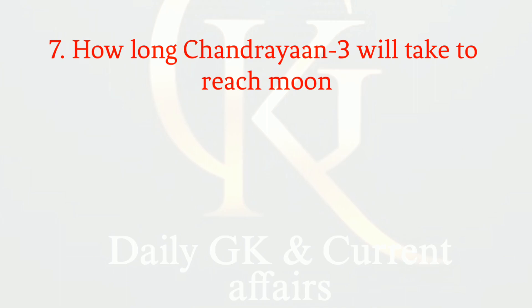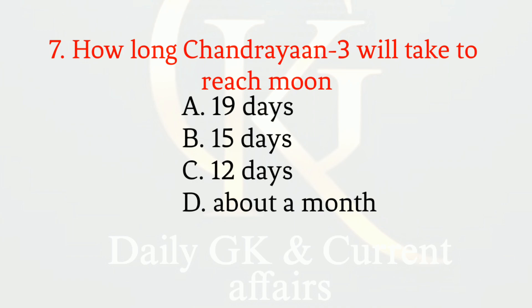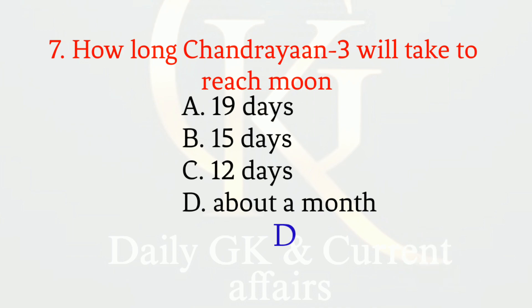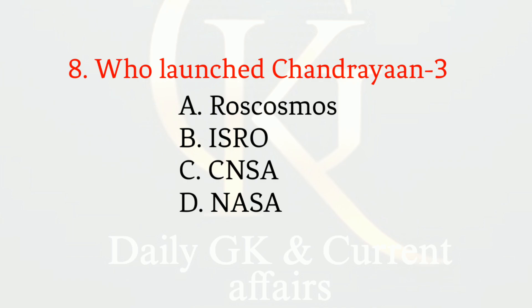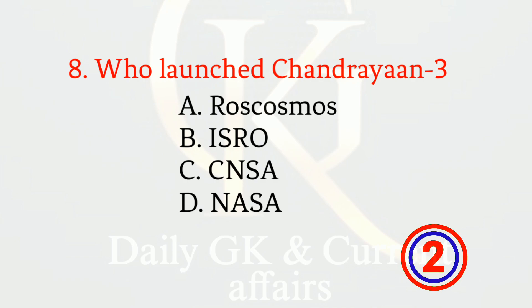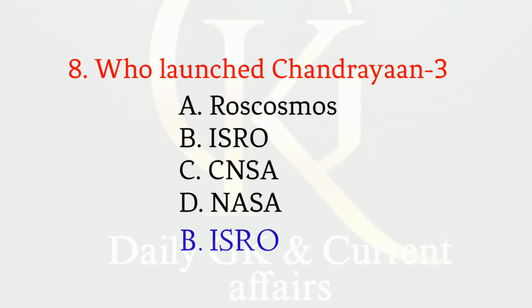How long will Chandrayaan-3 take to reach the moon? The correct option is D: about a month. Who launched Chandrayaan-3? The correct option is B: ISRO.